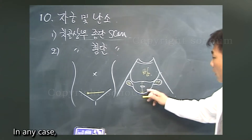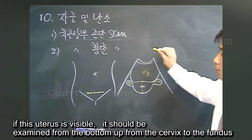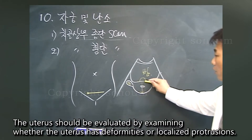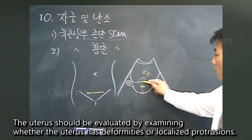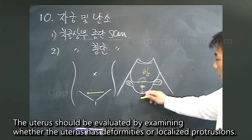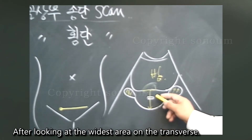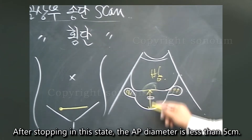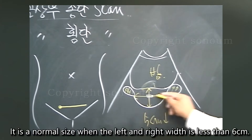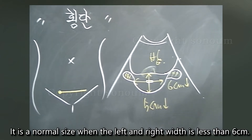In any case, if the uterus is visible, it should be examined from the bottom up — from the cervix to the fundus. The uterus should be evaluated by examining whether it has deformities or localized protrusions. After looking at the widest area on the transverse, the AP diameter should be less than 5 cm, and the left-right width less than 6 cm for normal size.